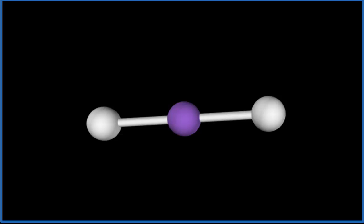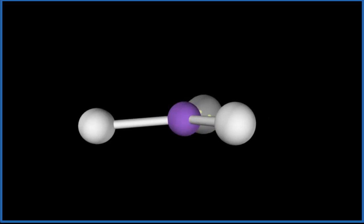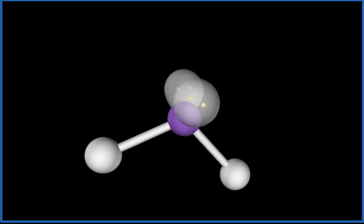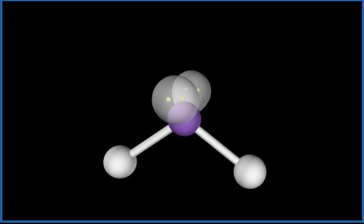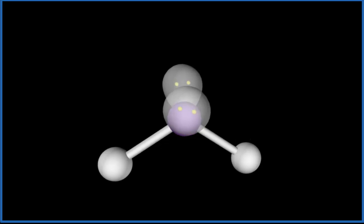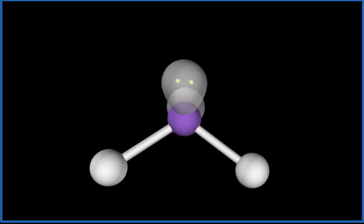Then we have those two lone pairs and they're important because they occupy space. So we add one and you see it pushes those hydrogens down. We add the other one and now we have what's called a bent molecular geometry and that's because these lone pairs are pushing the hydrogen atoms down away from the oxygen, or in the case of hydrogen sulfide, away from the sulfur. So we have a bent molecular geometry.